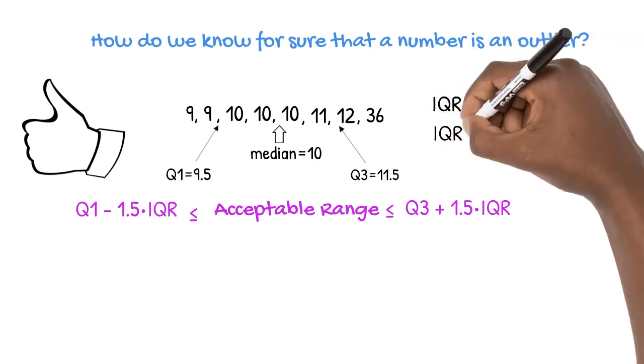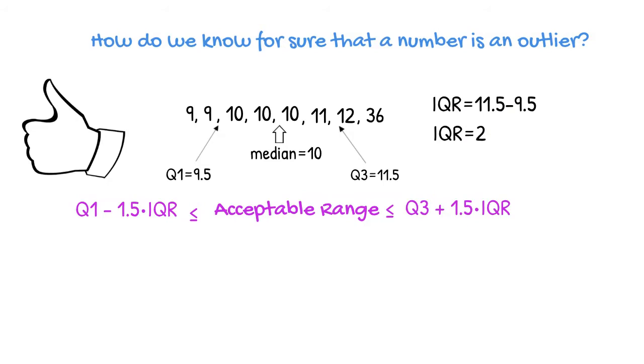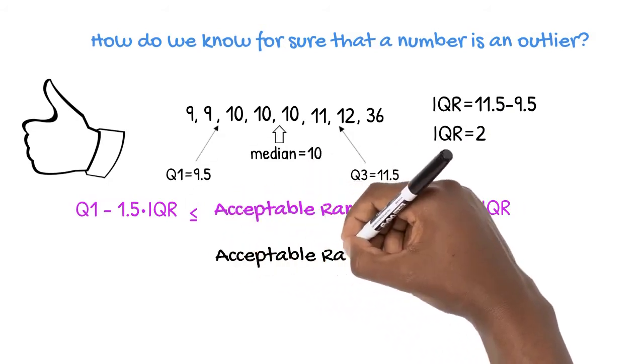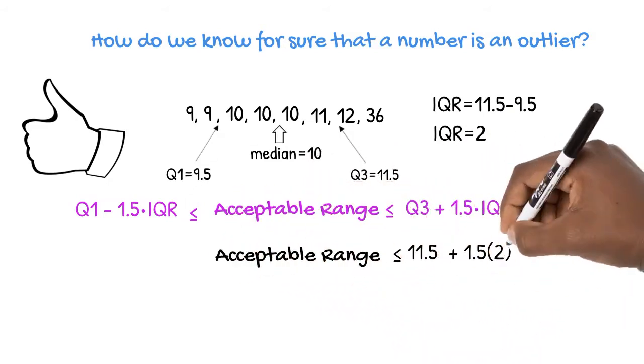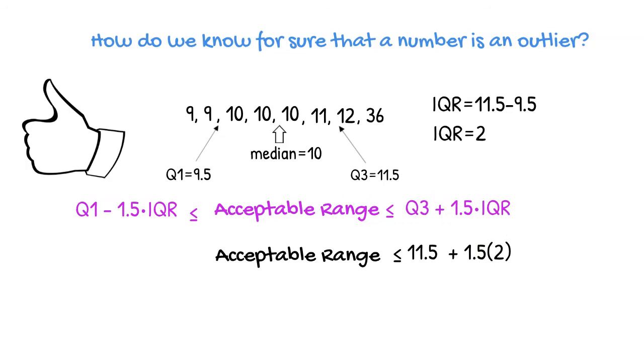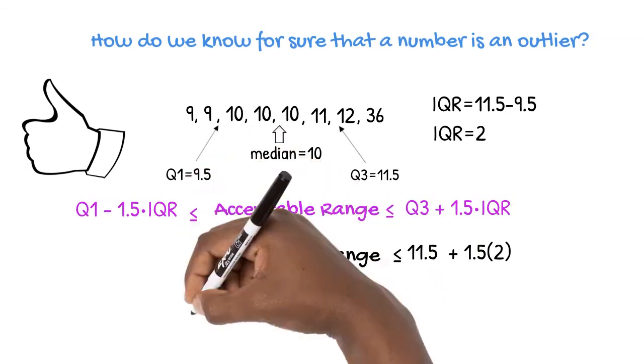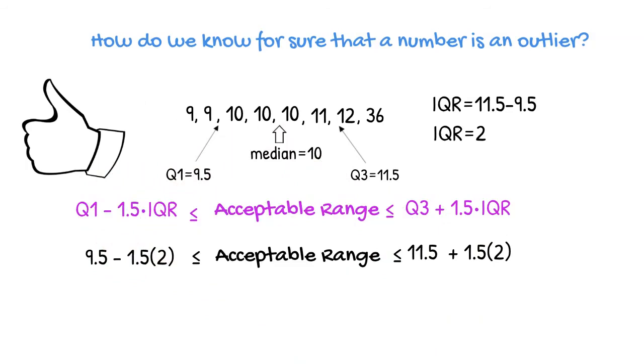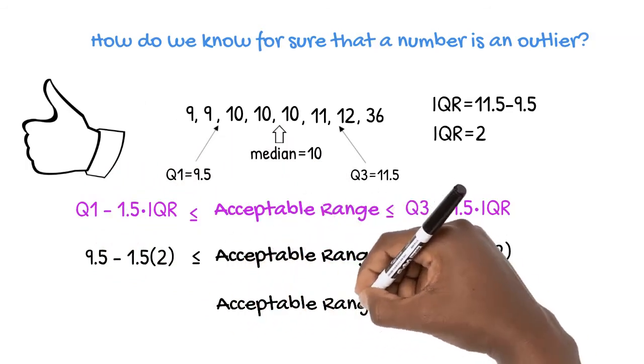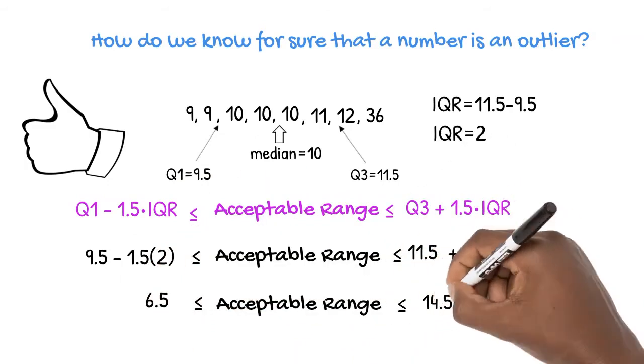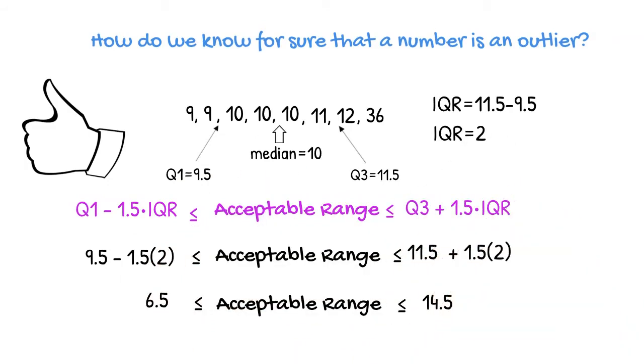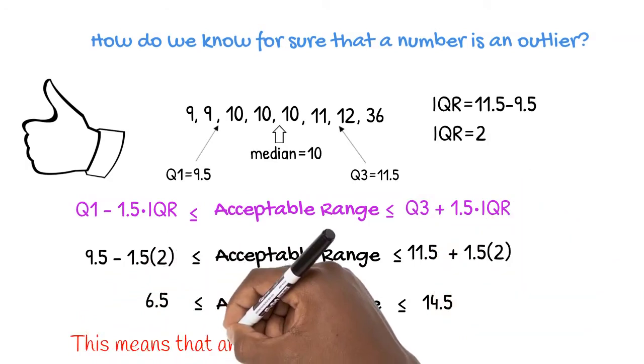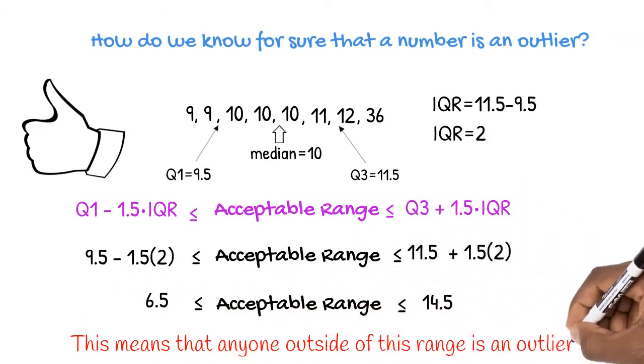Our acceptable range in this example is less than 11.5 plus 1.5 times 2. It is also greater than 9.5 minus 1.5 times 2. Our acceptable range lies between 6.5 and 14.5. This means that anyone outside of this range is an outlier.